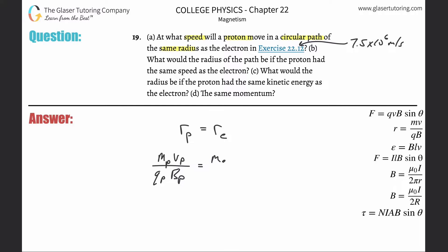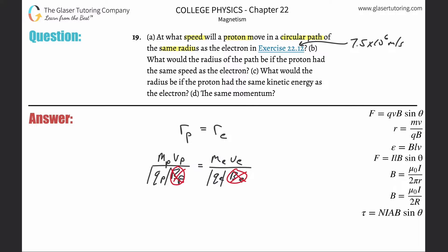There are a couple of things that are going to cancel. The proton is going to be in the same environment, so I'll assume the magnetic fields for both are the same — they cancel. Now the charge: the proton is positive 1.6 times 10 to the minus 19th, and the electron is negative 1.6 times 10 to the minus 19th. However, these are really the magnitudes — the absolute values — and therefore they will also cancel.